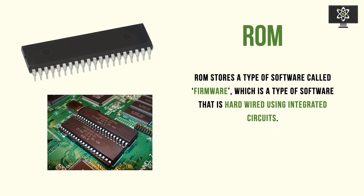Things that are so important and inherent to a device that they should not be changed. The type of software that ROM stores is known as firmware. Firmware, by definition, is a type of software that needs to be hardwired into integrated circuits. In other words, this software is hardwired into ROM, and we're going to be talking about how firmware can be hardwired into ROM.